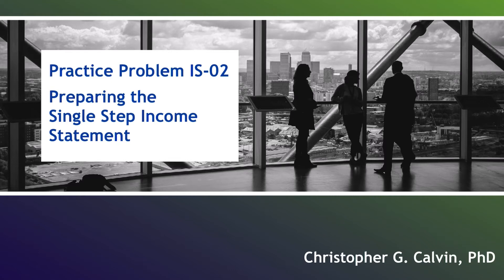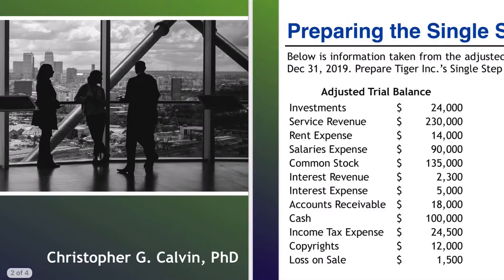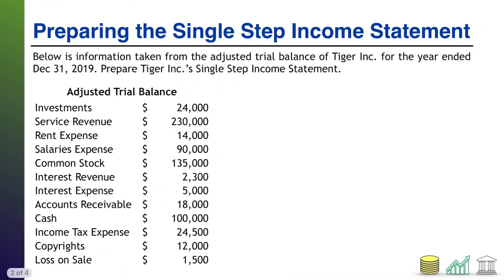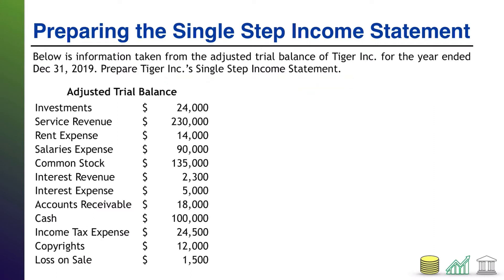Hi, everyone. In this problem, we are going to practice preparing a single-step income statement. Below is information taken from the adjusted trial balance of Tiger, Inc. for the year ended December 31, 2019. Prepare the single-step income statement.